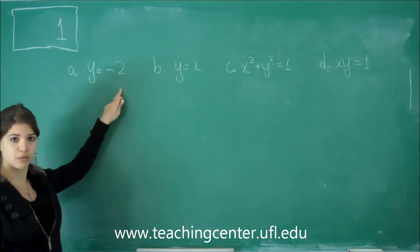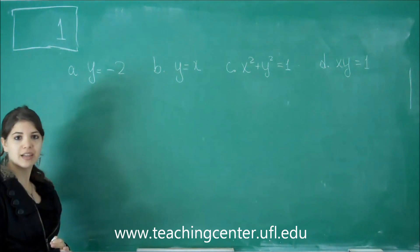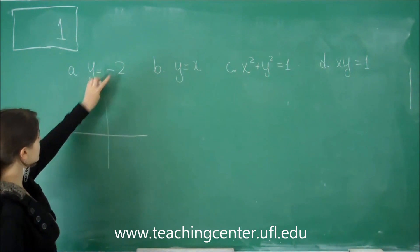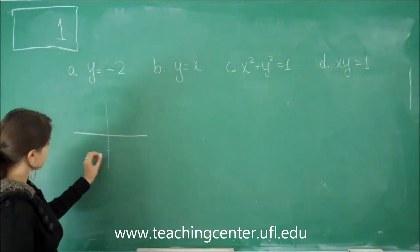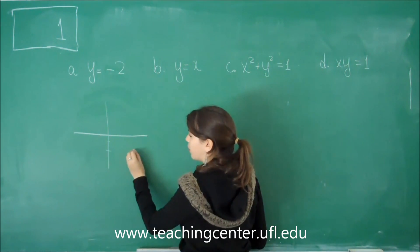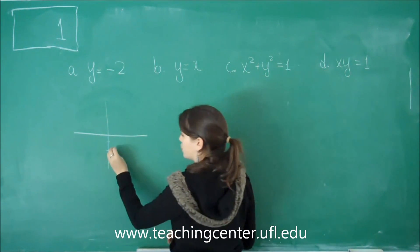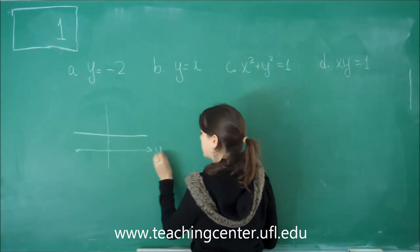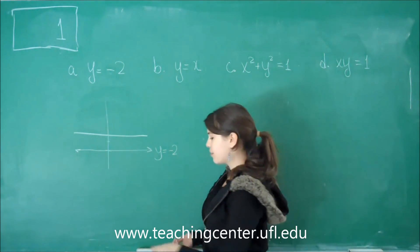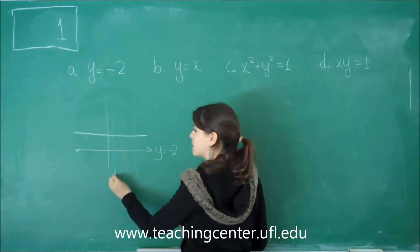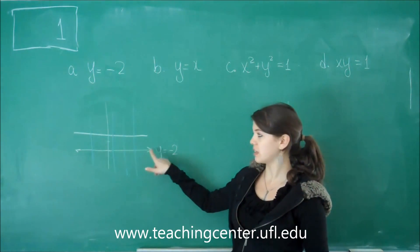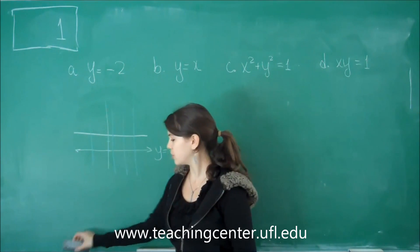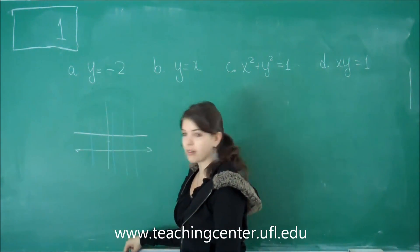The first one says y equals negative 2. You might think in the beginning it's not a function of x because there's no x, but when you graph this out, y equals negative 2 is going to be right here. That means whatever x you're in, y is always going to be negative 2. You're going to form a line that looks like this. If we try doing the vertical line test, we see that at any point that we try to cross this function, we're only going to be crossing the graph at one point. So this actually is a function. Just note that even though there's no x, it's still good.